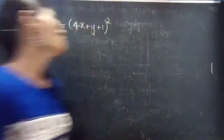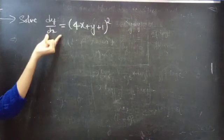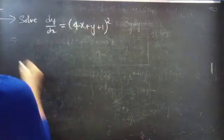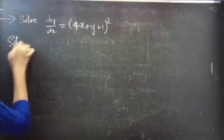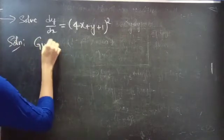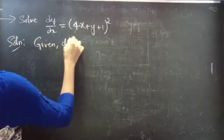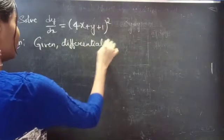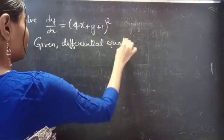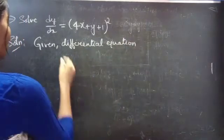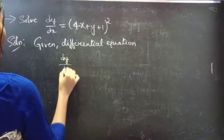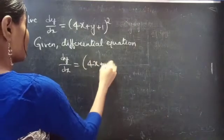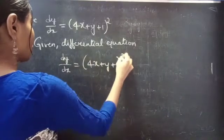Problem. Solve dy by dx equals to 4x plus y plus 1 whole square. Solution. Given differential equation: dy by dx equals to 4x plus y plus 1 whole square.